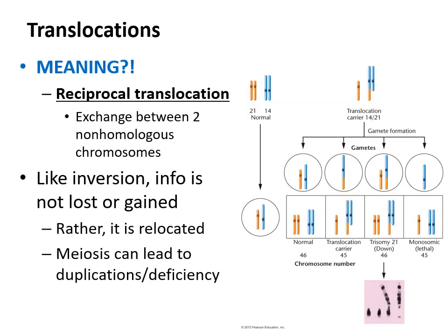The next type is translocations — the movement of a chromosomal segment to a completely new location in the genome. Sometimes it's called reciprocal translocation, which can be an exchange between two non-homologous chromosomes. Unlike recombination between homologous chromosomes, when non-homologous chromosomes exchange segments, that's reciprocal translocation. Just like inversions, you're not actually adding or removing anything — you're just moving where genes are located. But once meiosis occurs with these movements, you can end up with abnormal outcomes.